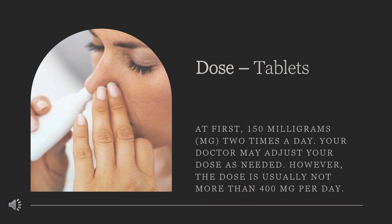Dose. The dose of this medicine will be different for different patients. For oral dosage form tablets, for osteoarthritis, rheumatoid arthritis, and ankylosing spondylitis — adults: at first, 150 mg, 2 times a day. Your doctor may adjust your dose as needed. However, the dose is usually not more than 400 mg per day. Children: use and dose must be determined by your doctor.